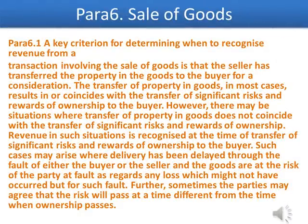Sale of Goods — Para 6.1: A key criterion for determining when to recognize revenue from a transaction involving the sale of goods is that the seller has transferred the property in the goods to the buyer for a consideration. The transfer of property in goods in most cases results in or coincides with the transfer of significant risks and rewards of ownership to the buyer. However, there may be situations where transfer of property in goods does not coincide with the transfer of significant risks and rewards of ownership.